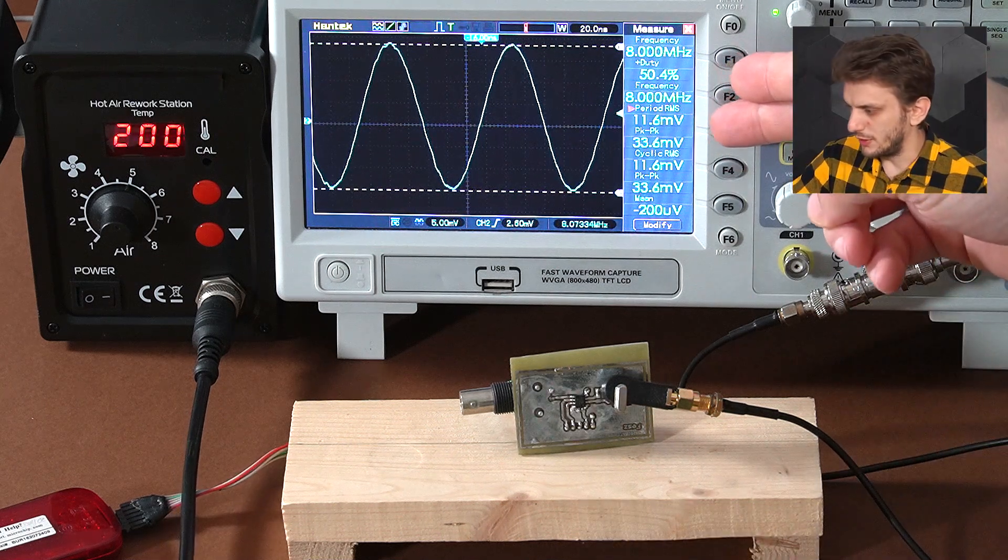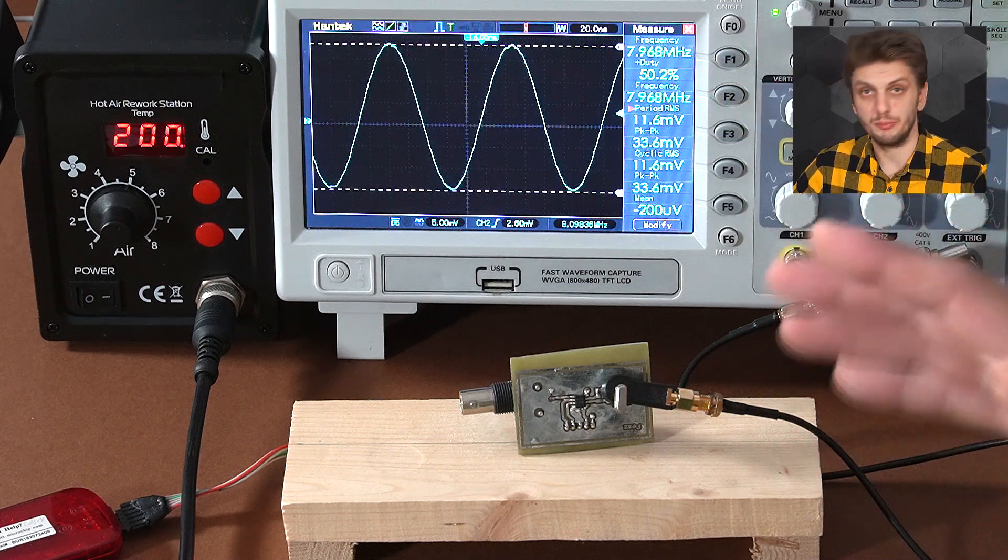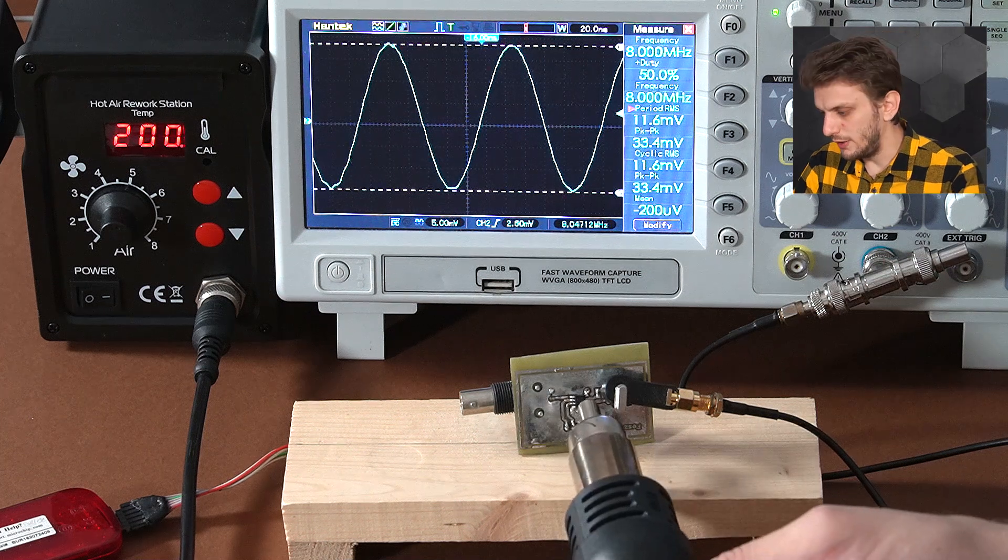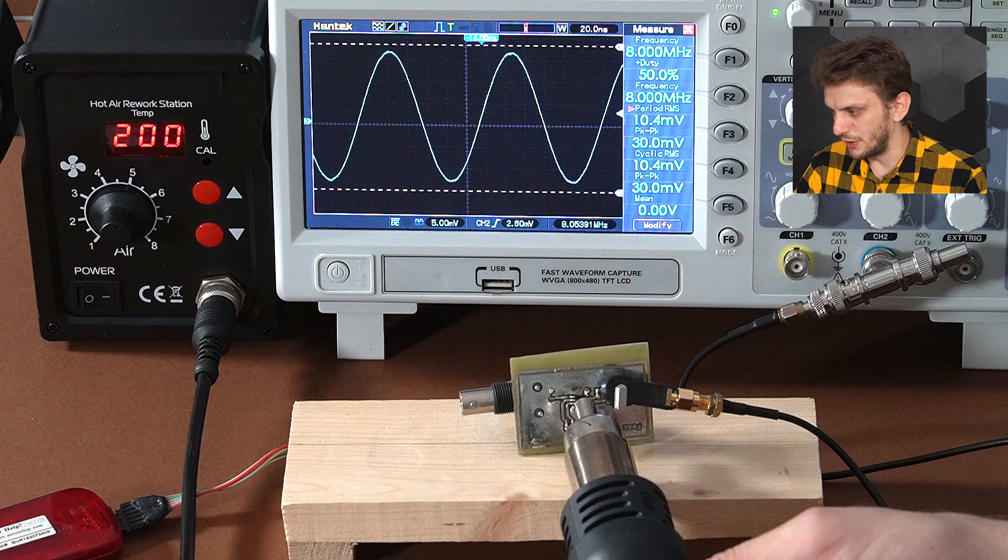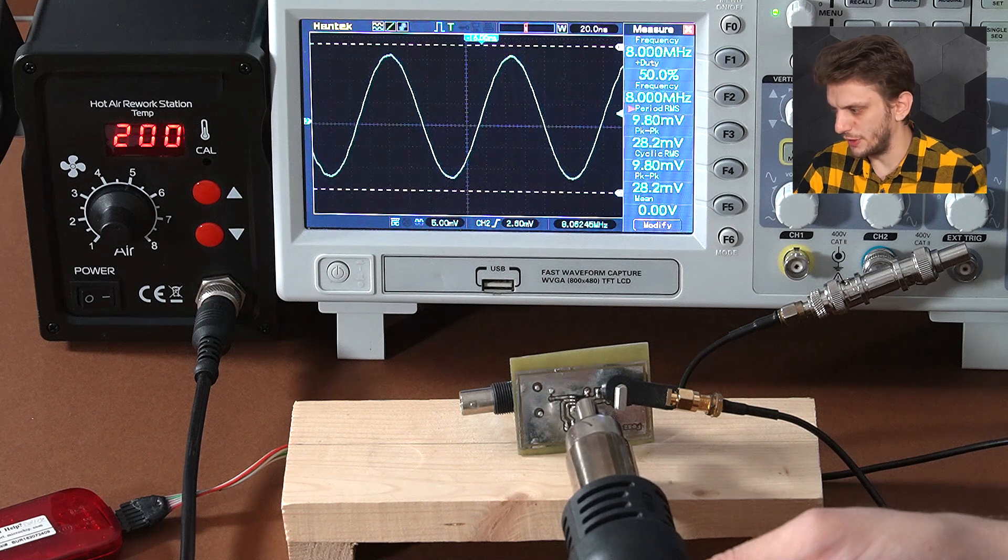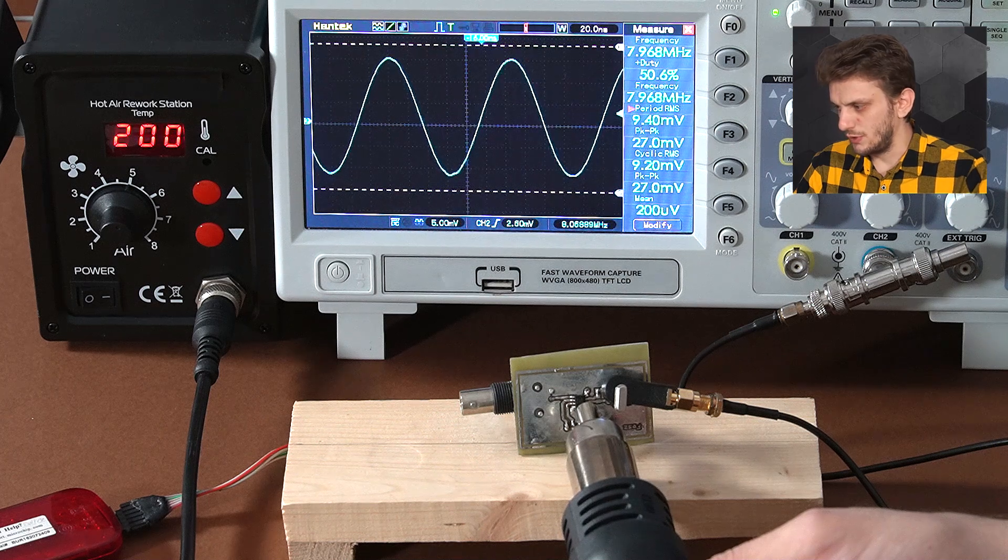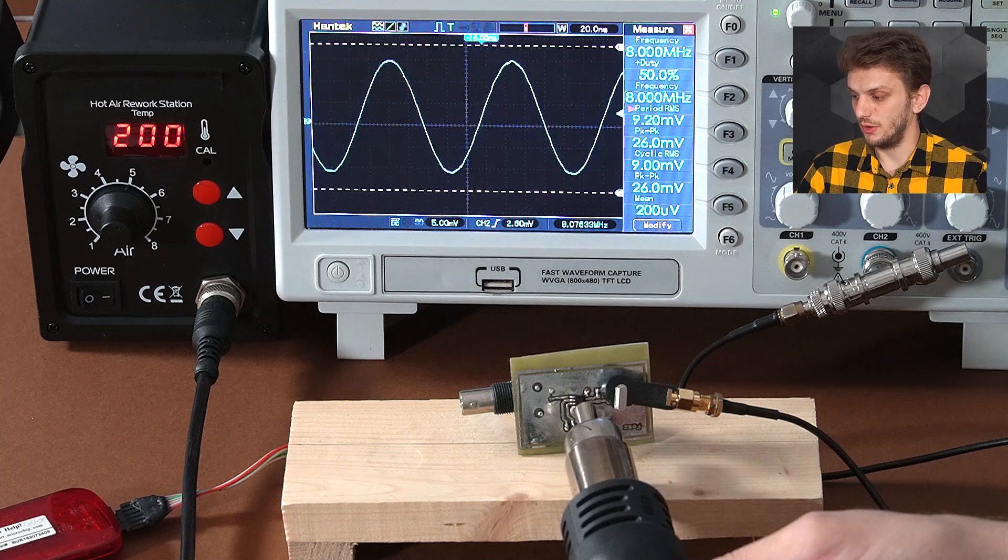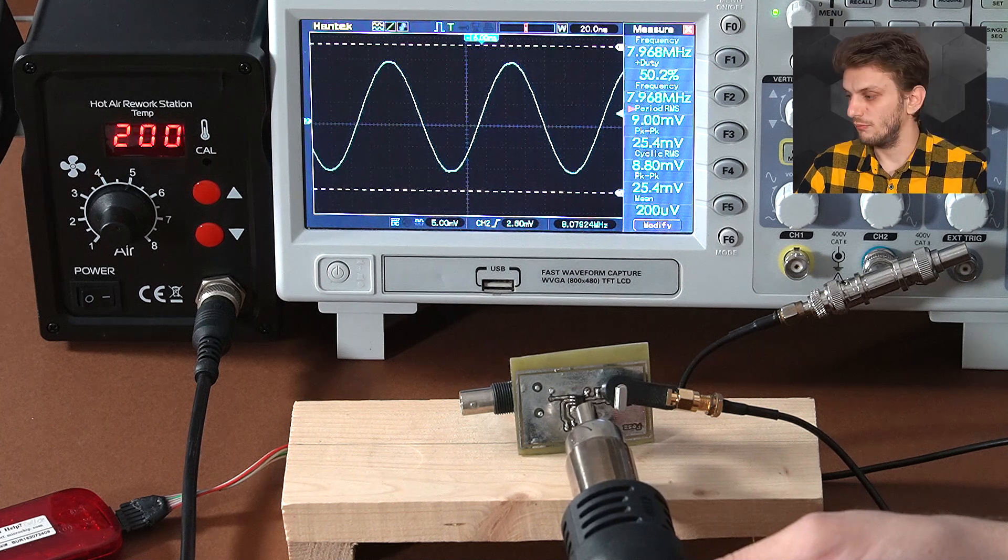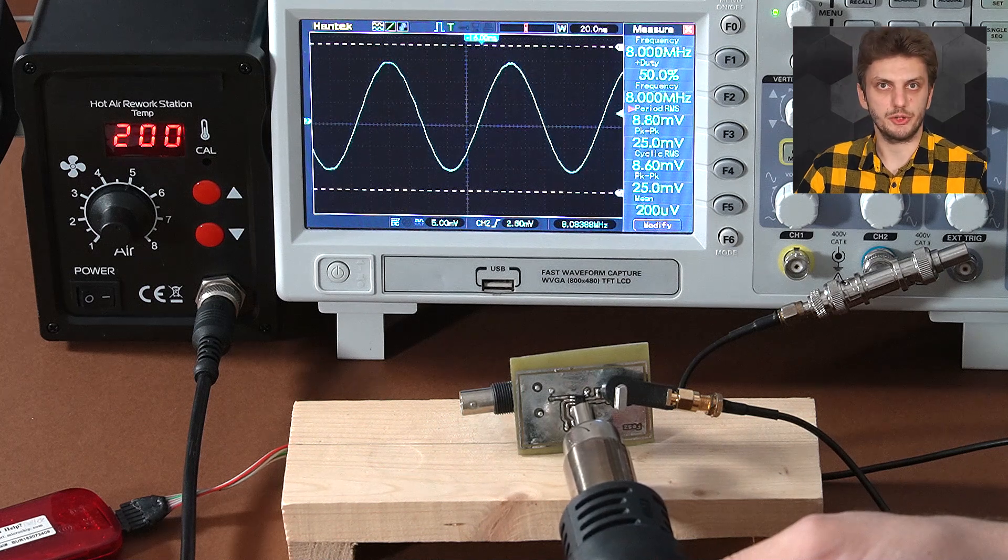So we're starting off with an RMS amplitude of about 11.6, 11.8 millivolts. And if we heat up the IC, we can see this value going down. So we're already at 10, 9.8, and so on. So the hotter the IC gets, the lower the gain is, and therefore the lower the current going through the IC gets. So we're going to get the smallest gain at the highest temperature.